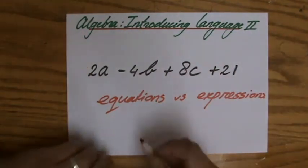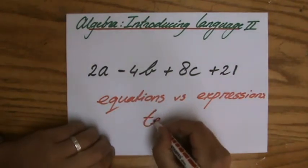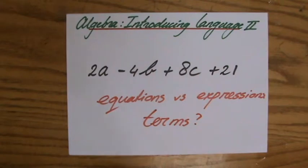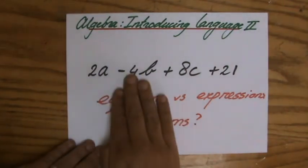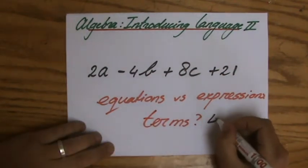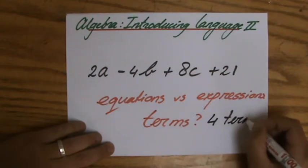And then my next question could be, how many terms does this expression have? And then you should say, okay, terms. So I have one, two, three, four terms in this expression. So this expression has four terms. Okay, very good.